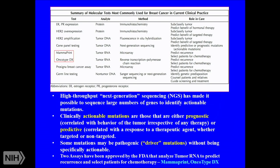Next-generation sequencing has made it possible to sequence large numbers of genes, which is very helpful to the oncology field. Clinically actionable mutations are defined as those that are prognostic — correlated with tumor behavior — or predictive — correlated with response to a therapeutic agent. Some mutations are pathogenic driver mutations but are not specifically actionable. Two FDA-approved assays analyze tumor RNA to predict recurrence and select patients for chemotherapy: MammaPrint and Oncotype DX.